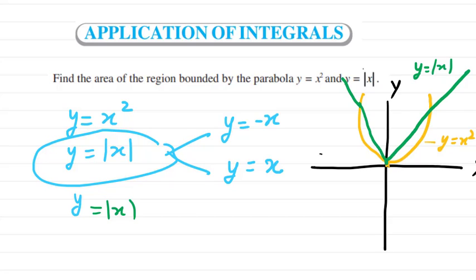Now you need to find out the area of the region bounded by the parabola and bounded by the line. Basically, we need to find out this part and this part — the two shaded regions.